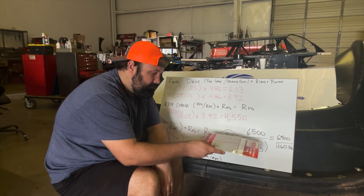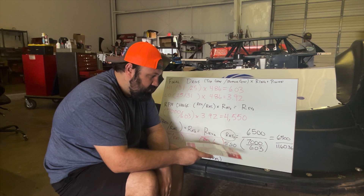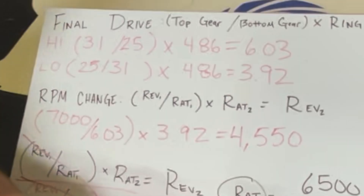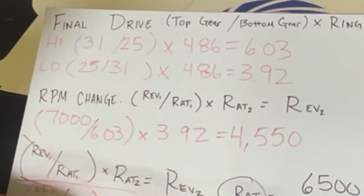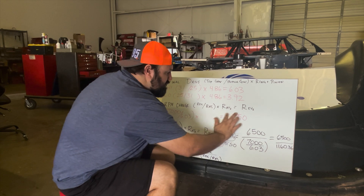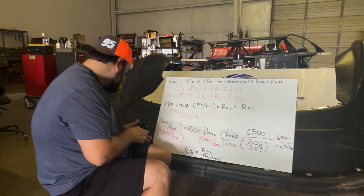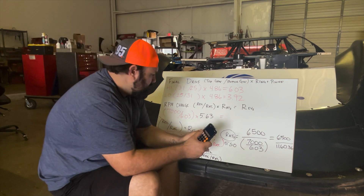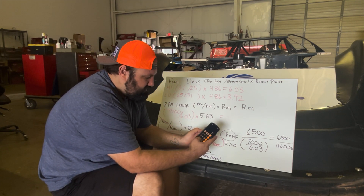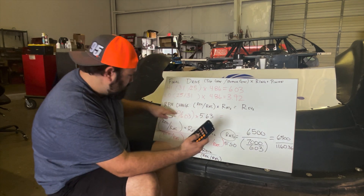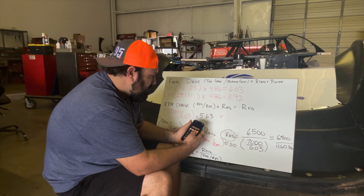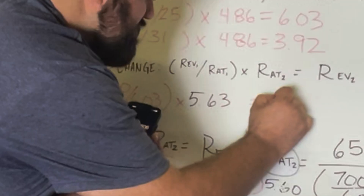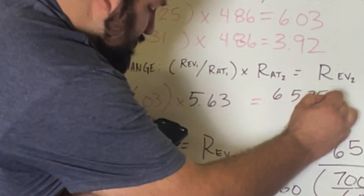To hit 6,500 RPM: if we run the 5.63 we'll be a little closer to 7,000; if we run the 5.55 we'll be a little under 6,500 RPM. We can double-check ourselves by running it through the equation. Changing out the new ratio to 5.63: 7,000 divided by 6.03 gives us 1,160.86, times 5.63 — we'd be running 6,535 RPM with that gear.